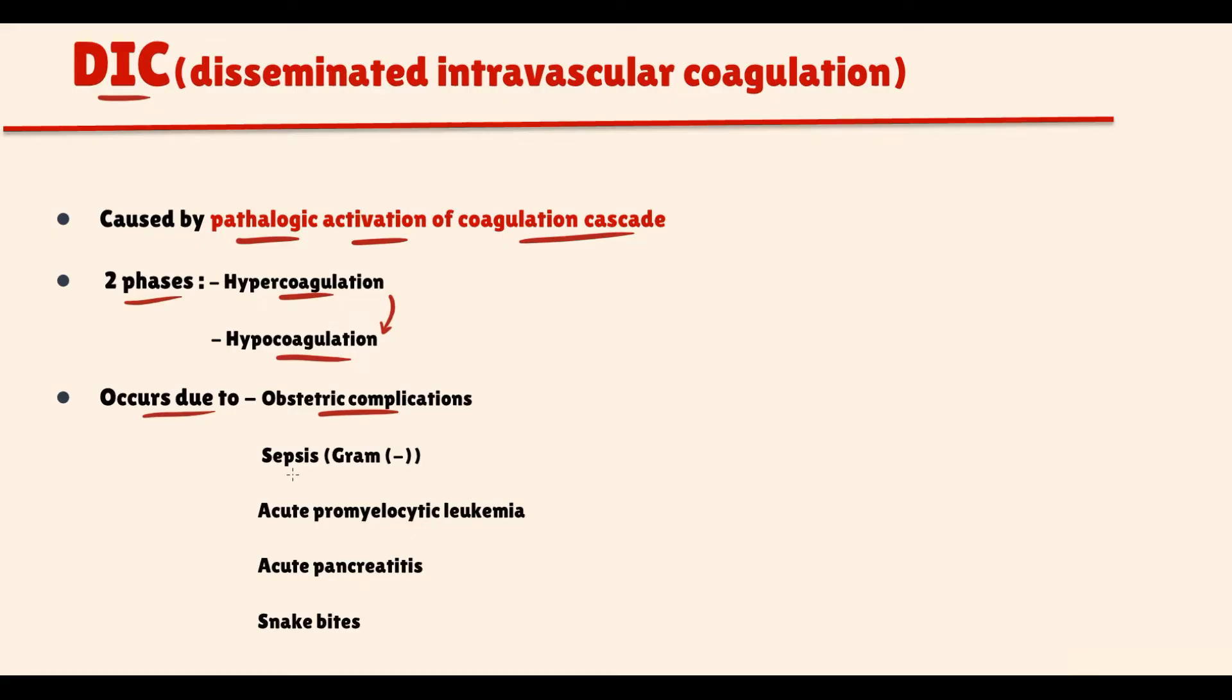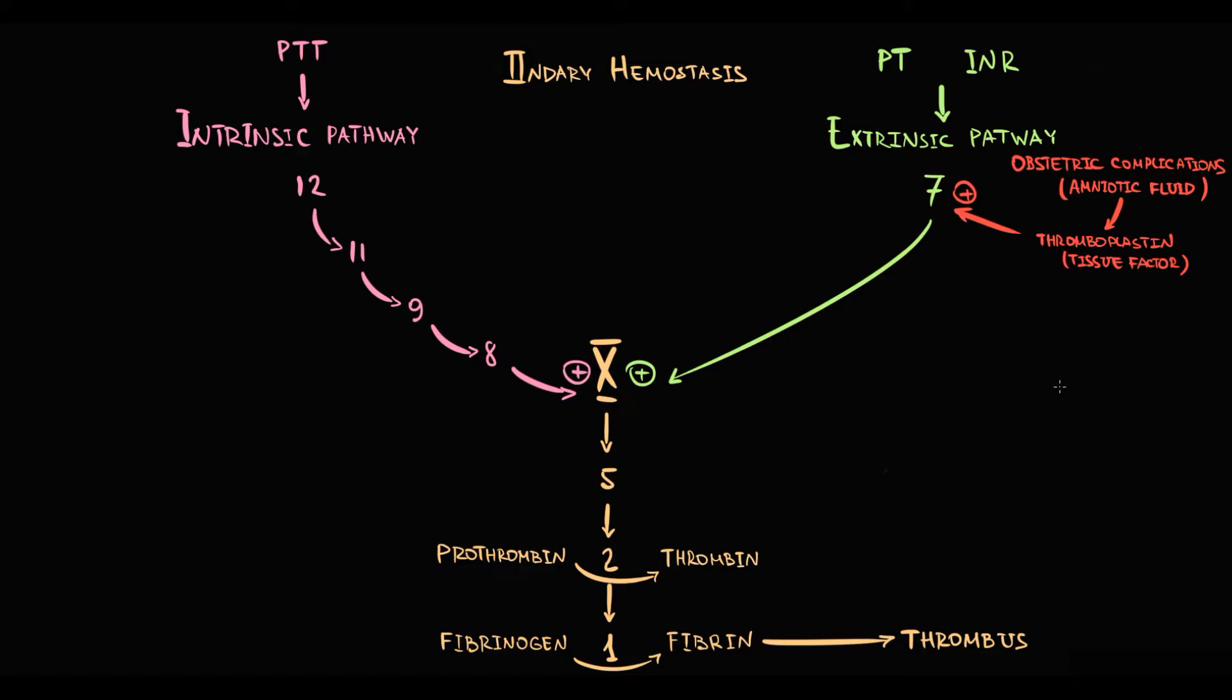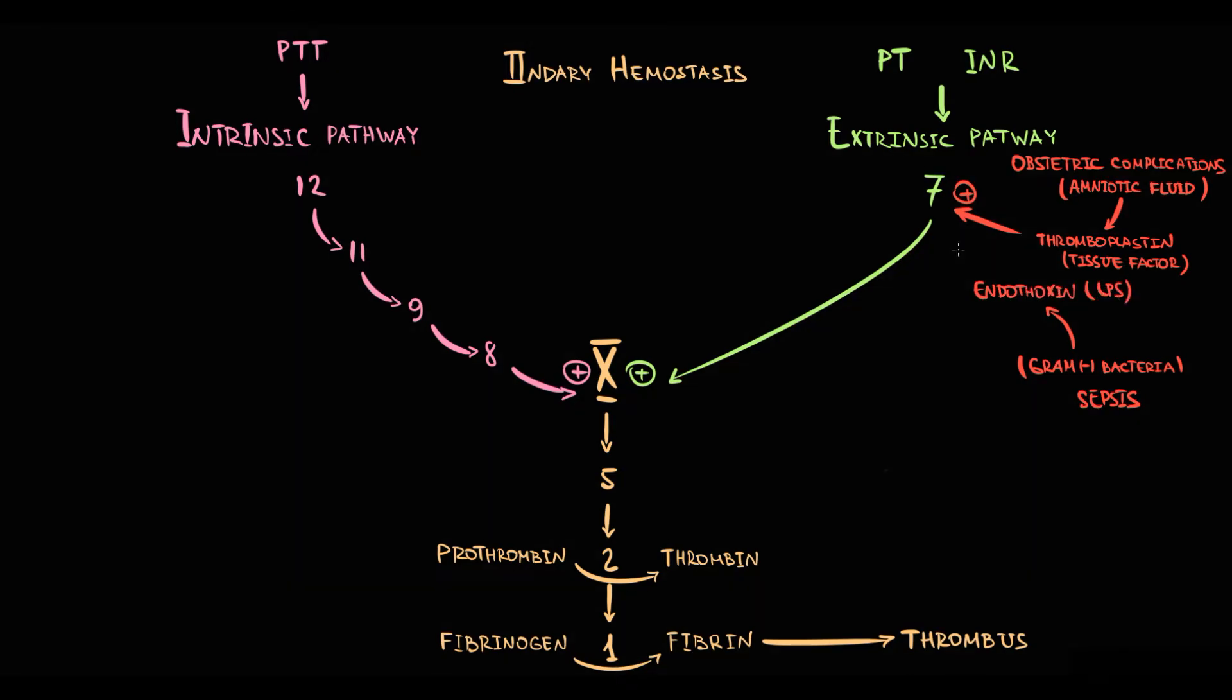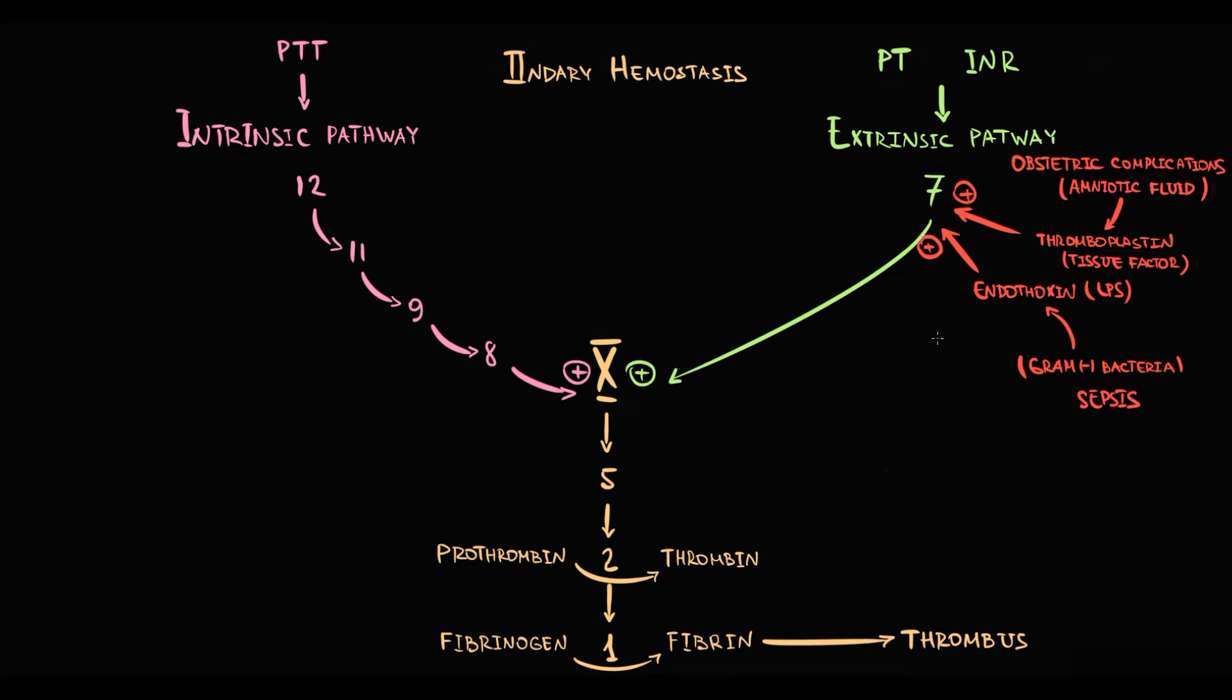The second condition is sepsis. In sepsis there are a lot of bacteria in the circulation, and some of the bacteria are gram-negative. Gram-negative bacteria in their walls contain a lot of endotoxin, which is lipopolysaccharide. Lipopolysaccharide is a strong activator of factor 7.